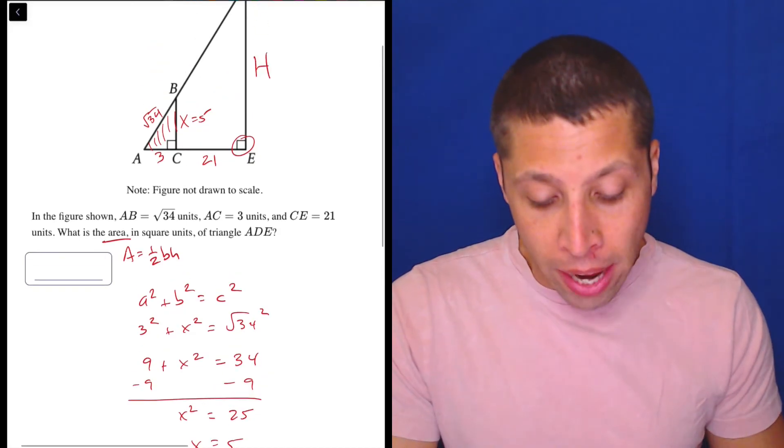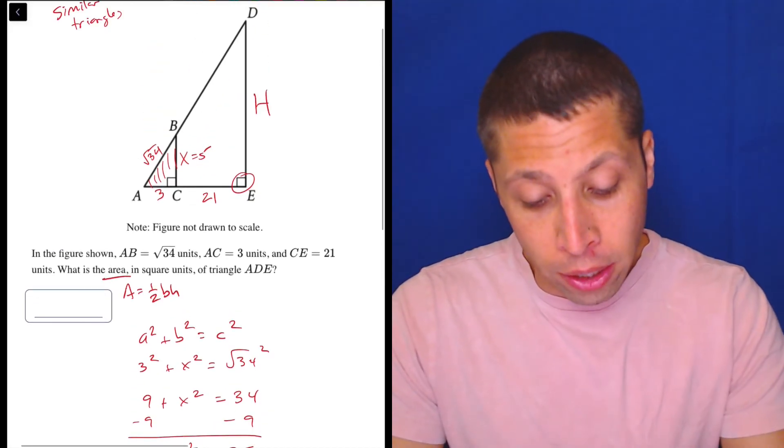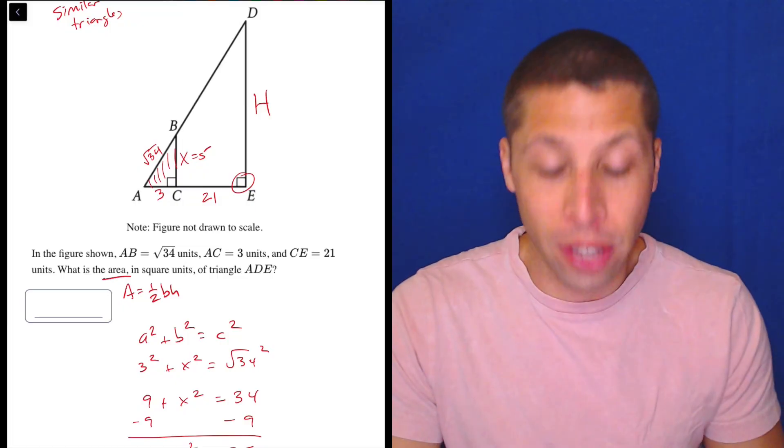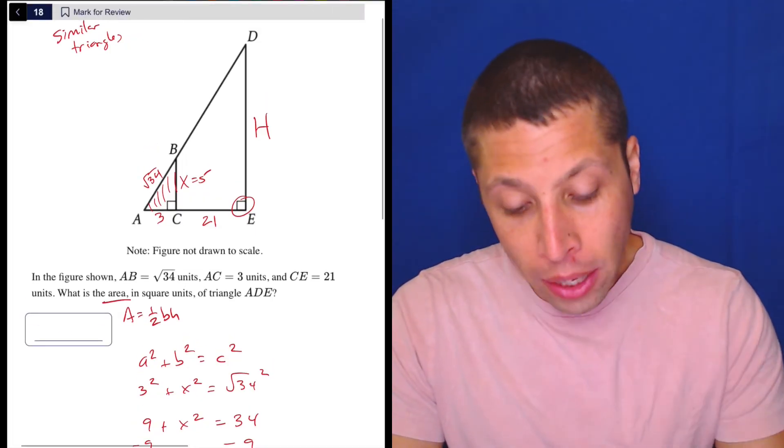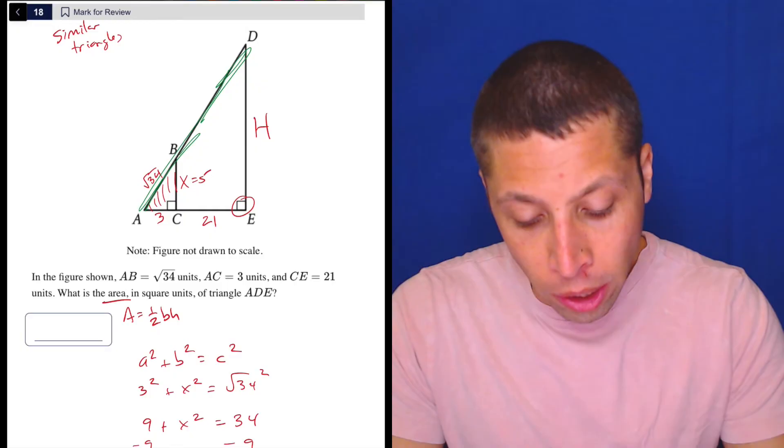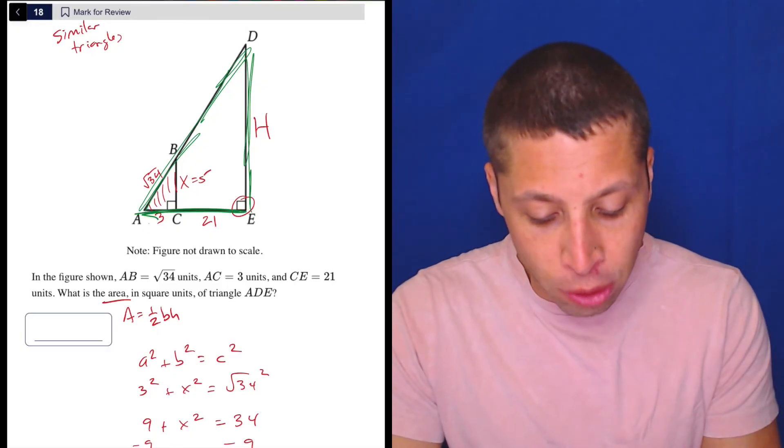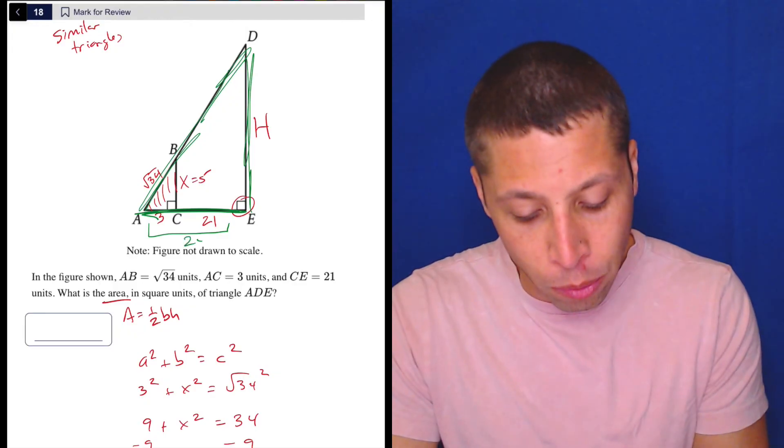And now we have what we need. We have two sides of the big triangle, or we can think about two sides of the big triangle, and we have two sides of the small triangle, right? So if we're thinking about the big triangle, we're going to use the height, and we're going to use the base. But remember, the base isn't 21. The base is 3 plus 21. It's 24.